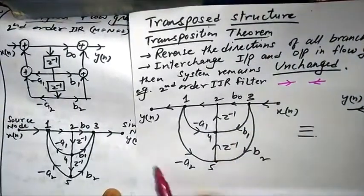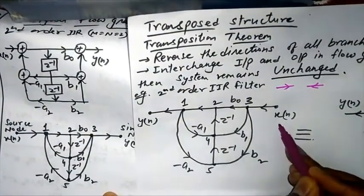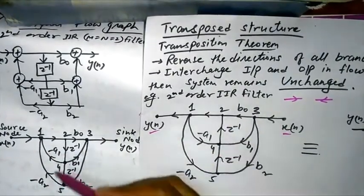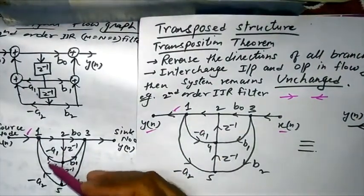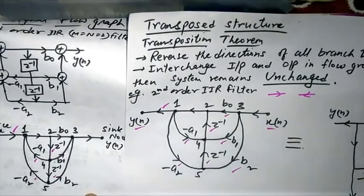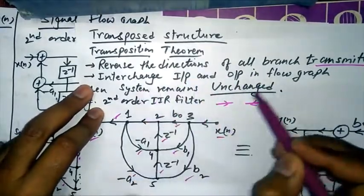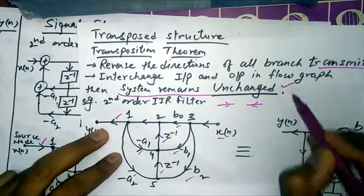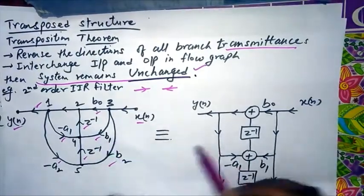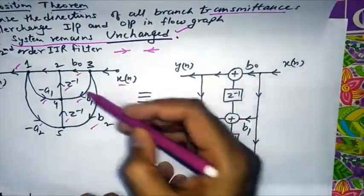In the second-order structure signal flow graph we studied, the only difference in the transpose form is changing the direction of arrows and swapping input and output — Y(n) becomes the input side reference and X(n) the output side. Arrows are reversed everywhere, giving the transposition form. The transposition theorem states that reversing directions and interchanging input and output leaves the system function unchanged.